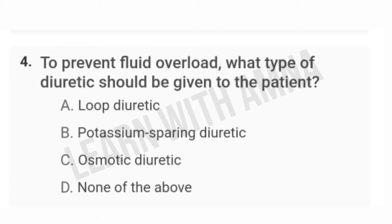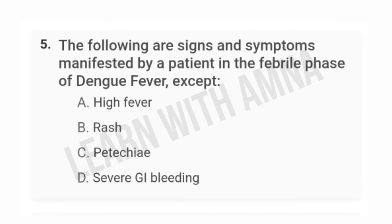To prevent fluid overload, what type of diuretic should be given to the patient? A) Loop diuretic. B) Potassium-sparing diuretic. C) Osmotic diuretic. D) None of the above. The correct answer is A. The following are signs and symptoms manifested by the patient in the febrile phase of dengue fever, except — A) High fever. B) Rash. C) Petechia. D) Severe GI bleeding. The correct answer is D.